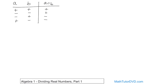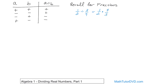One more thing to recall for fractions: if you're dividing by another fraction — for instance, one-half divided by three-fourths — the way you handle that is it turns into multiplication. You multiply the first fraction by the flipped version of the other fraction, making it four-thirds. That's how you handle all fraction division: multiply the first fraction by the reciprocal of the second.